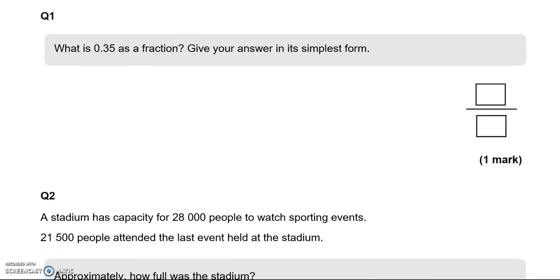First question is asking, what is 0.35 as a fraction? Give your answer in its simplest form. 0.35 is like 35 out of 100. We can divide both numbers by 5. So if I divide 35 by 5, I'm going to get 7. And if I divide 100 by 5, I'm going to get 20.